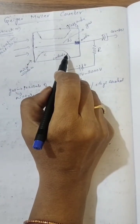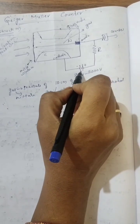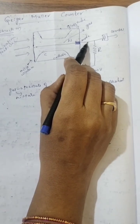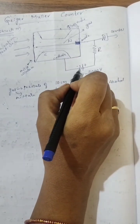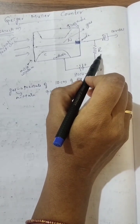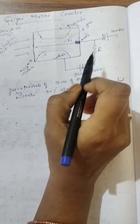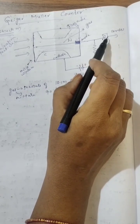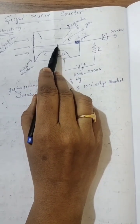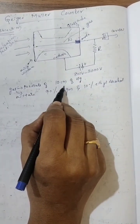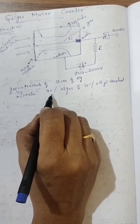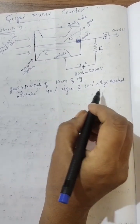Between the copper tube and the tungsten wire, a high tension battery is connected. The positive terminal is connected to the tungsten wire, so it acts as anode. The negative terminal is connected to the copper tube, so it acts as cathode. A high resistance R is connected in the battery circuit. The tungsten wire is in turn connected to the amplifier and then to the counter. The copper tube is filled with gas at a pressure of 10 cm of mercury, and this gas is a mixture of 90% argon and 10% ethyl alcohol.